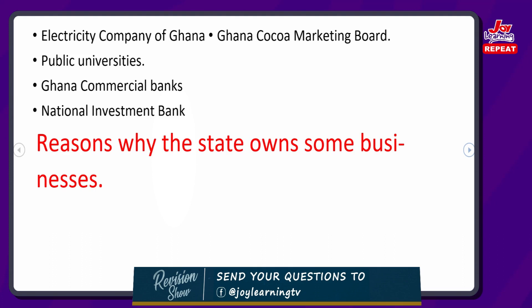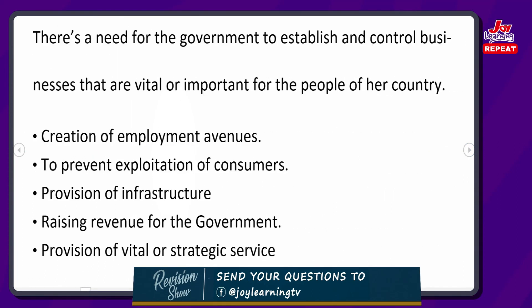I hope you are jotting down some of the salient points. Let's move on to reasons why the state owns some businesses. There is a need for the government to establish and control businesses that are vital or important for the people of Ghana. The first reason is the creation of employment — the state is able to create employment avenues for people.